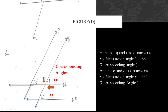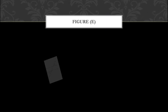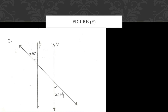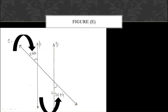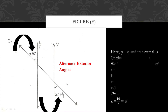That is how we find the measure of X in figure D. Now let us move on to figure E. Here the parallel lines are P and Q and the angles given are in the exterior region. One angle is given in the exterior region here, and the other angle is also in the exterior region of the parallel lines.